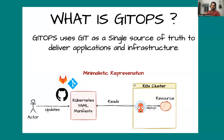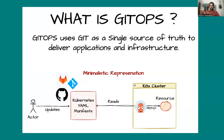Let's say there is no GitOps and you are trying to deploy your applications or infrastructure on Kubernetes. We will take a very basic example: we are trying to deploy a change to a Kubernetes worker node — probably we are trying to add a taint or increase the resources of your node. GitOps does not have to be only application deployment; GitOps is also about managing the infrastructure.